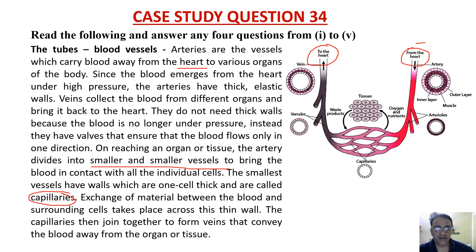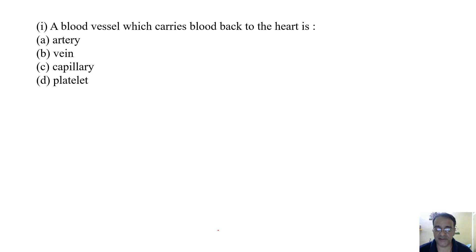Exchange of material between the blood and surrounding cells takes place across this thin wall. The capillaries then join together to form veins that convey the blood away from the organ or tissue. Based on this context, some questions follow — we'll start with the first question.